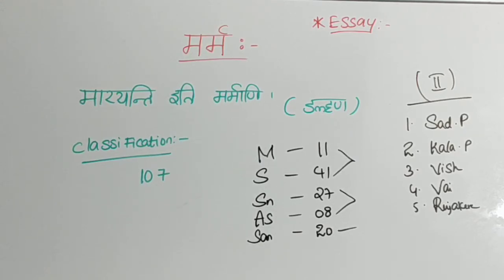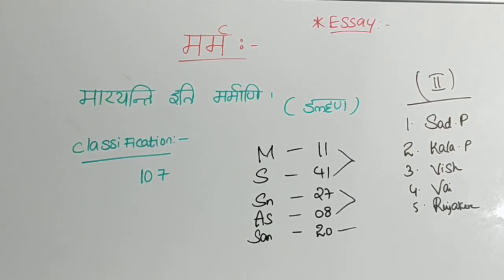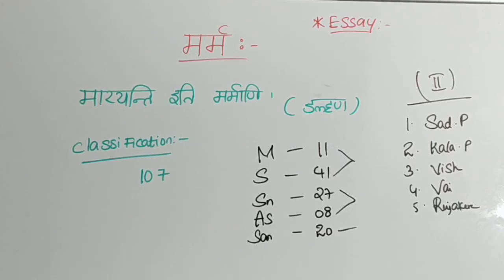These things you have to remember as a mnemonic: Mamsa-Sira — 11, 41; Snayu-Asthi — 27 and 8; finally Sandhi — 20. The order is Mamsa, Sira, Snayu, Asthi, Sandhi, with numbers 11, 41, 27, 8, 20. If you remember this, it will be easier for your viva and examination. If you want to answer the examiner about the number of Mamsa Marma, you can simply say 11.